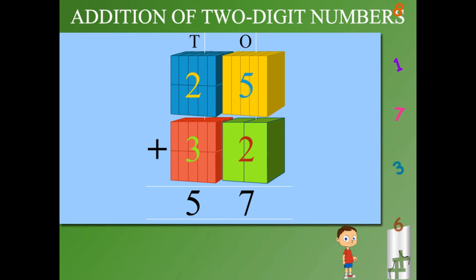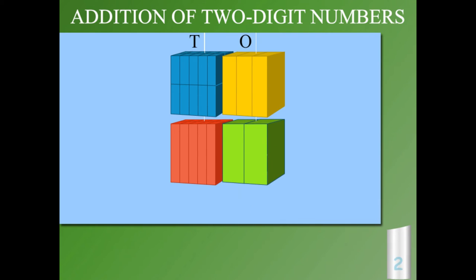is 5 tens. Use it: 57. This time it is 23 plus 12. Add the ones: 3 plus 2 is 5.